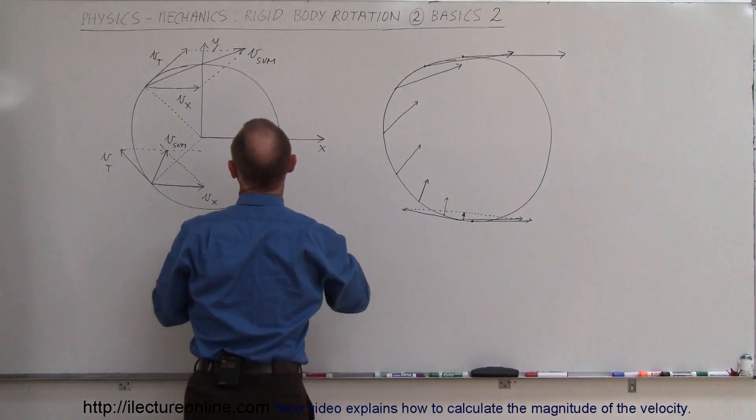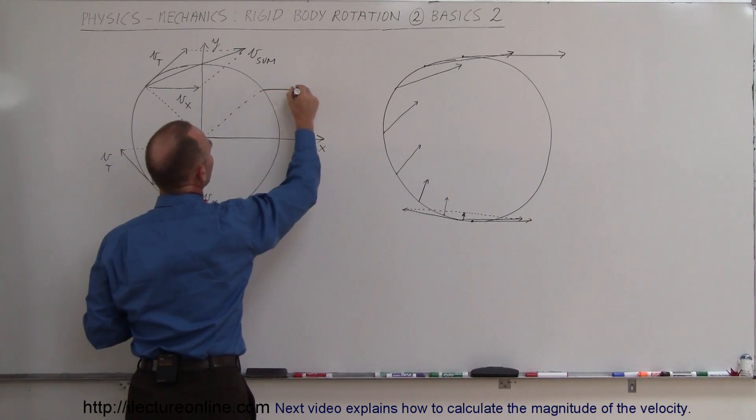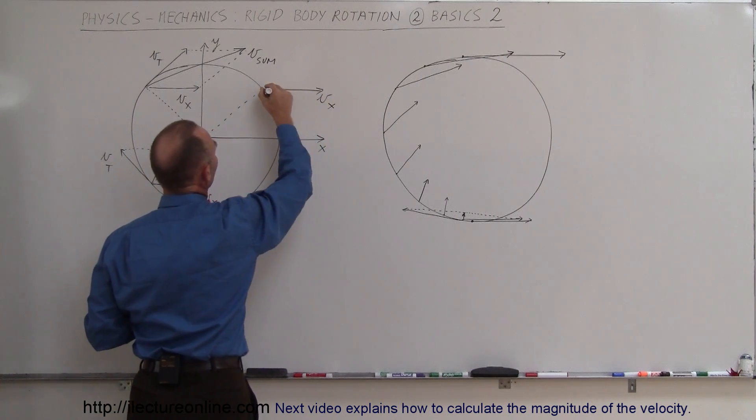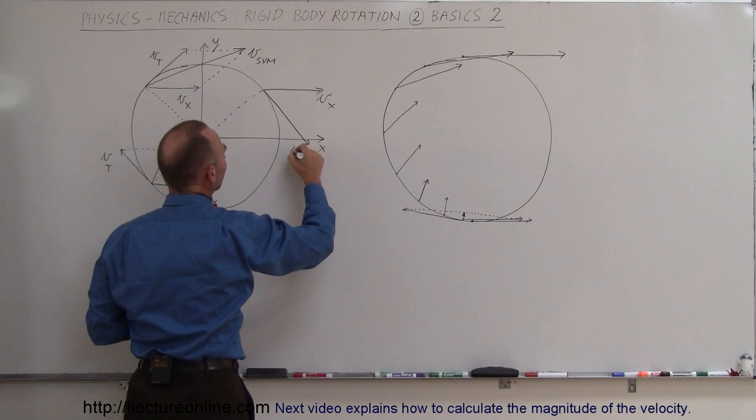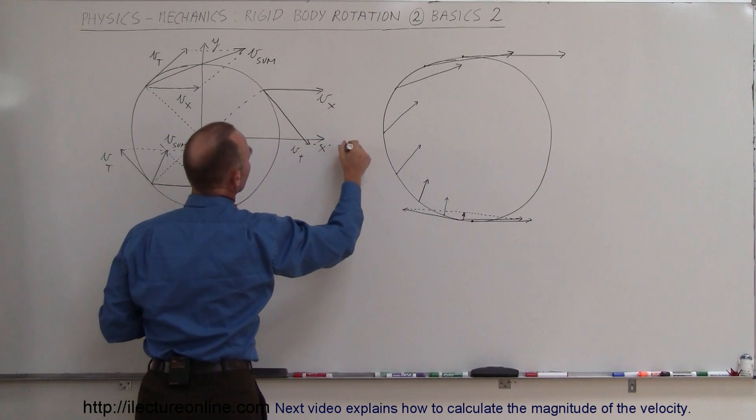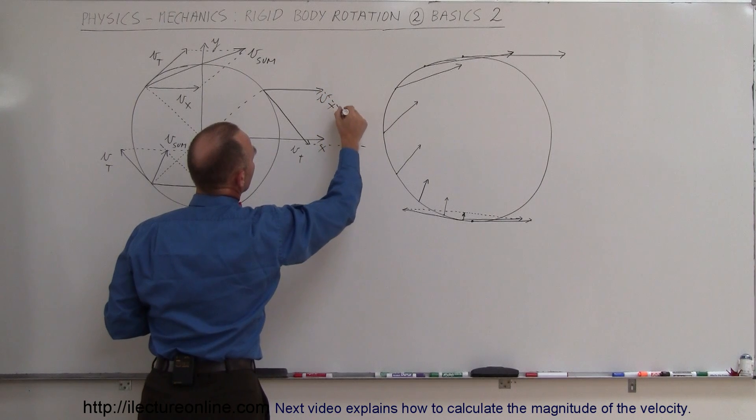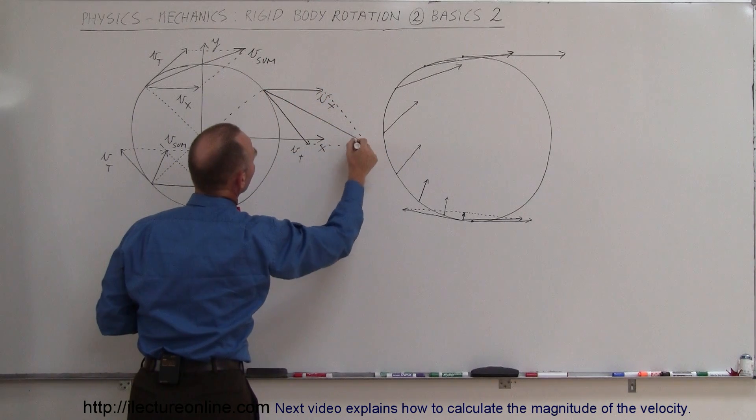When you come this way, let's draw what it looks like over here. If we take a point on the tire this way, we have the translational velocity V sub X and the tangential velocity V tangential. Then you can see if you draw the vector sum, that would be the vector sum right there.